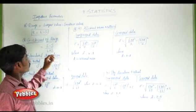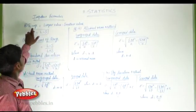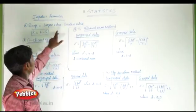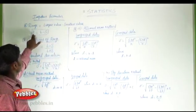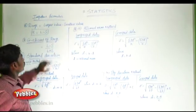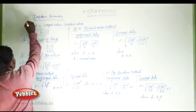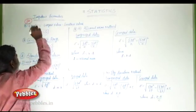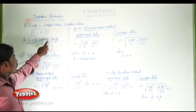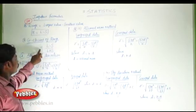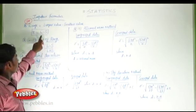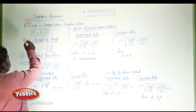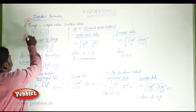The important formulas of statistics: Range is equal to largest value minus smallest value, that is R = L - S. This is a very important formula for two-mark questions. Coefficient of range is equal to (L - S) divided by (L + S), which is also a two-mark question.